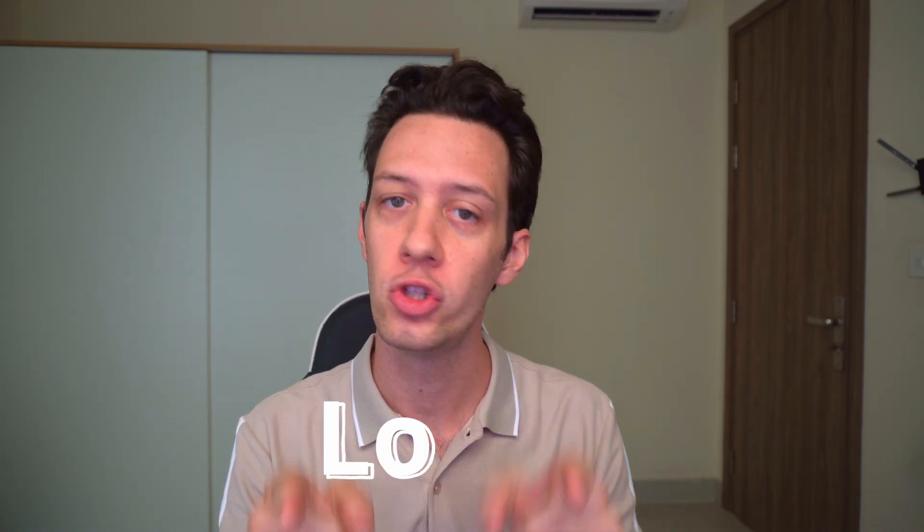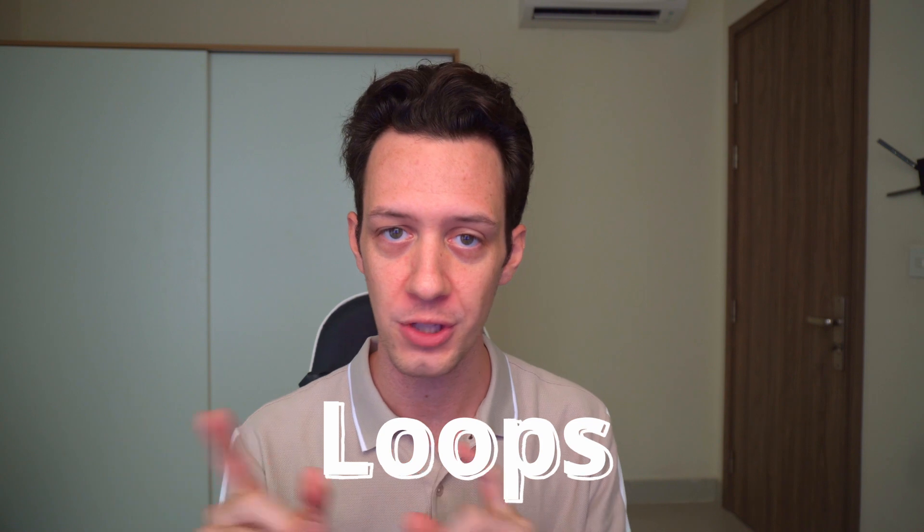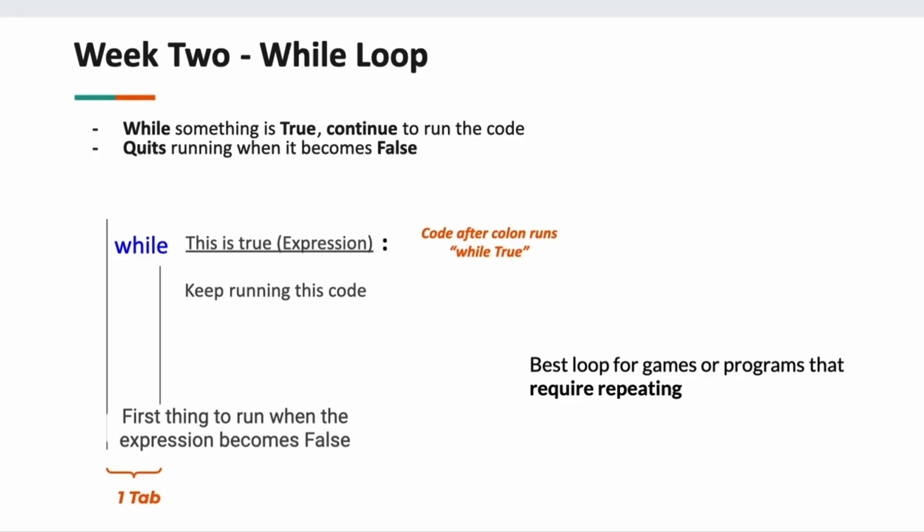Now that you have the basics covered, we're going into week two. Week two, I want you guys to focus on loops in Python. Now, we have two loops in Python. We have the while loop and the for loop. Let's check them out. Let's first talk about the while loop. Now, the while loop continues to repeat. It's kind of like a condition. It repeats while this is true. This code executes. When this expression becomes false or it's not true, this is the first thing that's going to run when the loop breaks or stops.